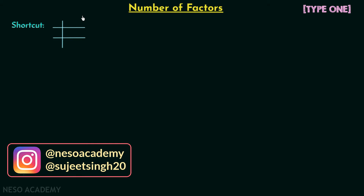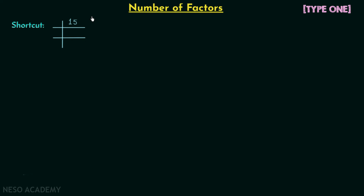To understand the shortcut method, we will take the same composite number 15. In the previous lecture we found the total number of factors for 15 is equal to 4, and here we will try to get the same answer using the shortcut method. Step one is to break 15 into prime numbers. We divide 15 by the smallest prime number we can — 15 is perfectly divisible by 3, giving us 5.